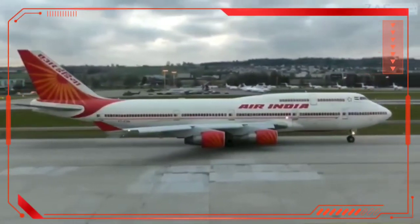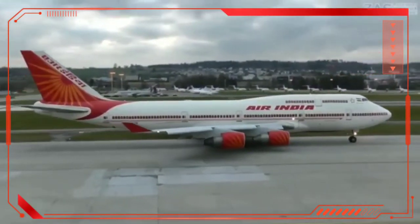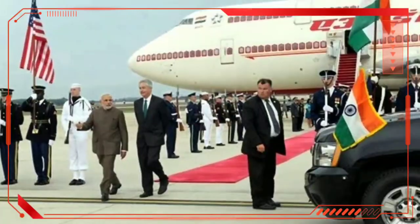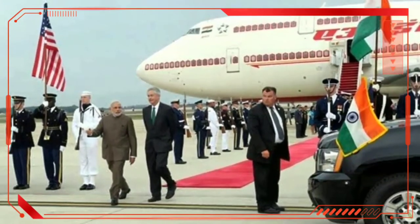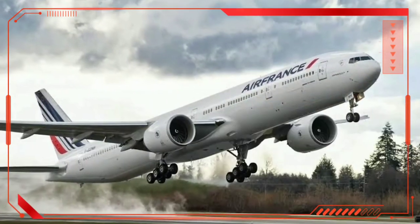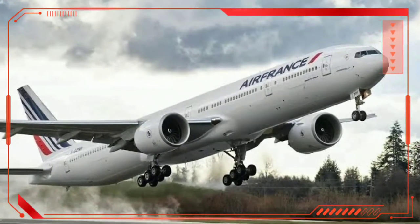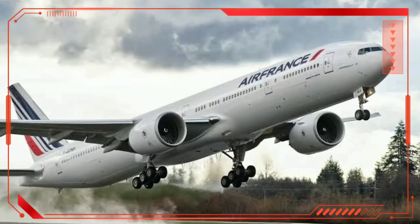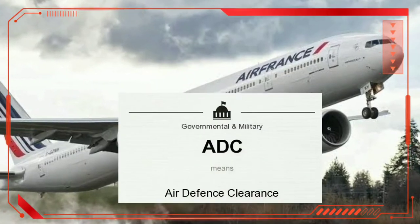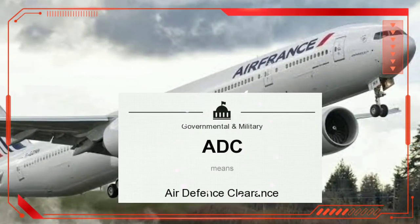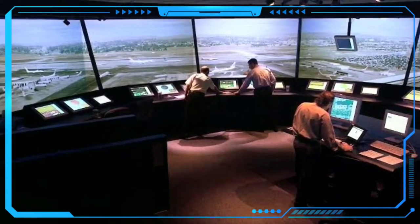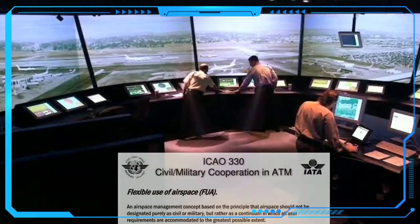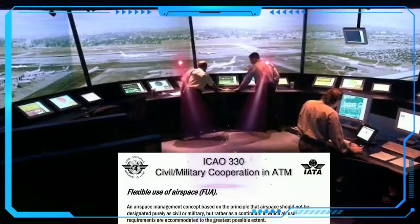Although Air India One is a civil aircraft maintained by Air India, the Indian Air Force coordinates during VVIP movements and provides security to VVIP personnel. If an aircraft, whether scheduled or non-scheduled, takes off from Indian airspace, it needs ADC — Air Defense Clearance — from the Indian Air Force. Also, at airports where both civil and defense air operations are carried out, civil and military authorities collaborate to provide ADC services.